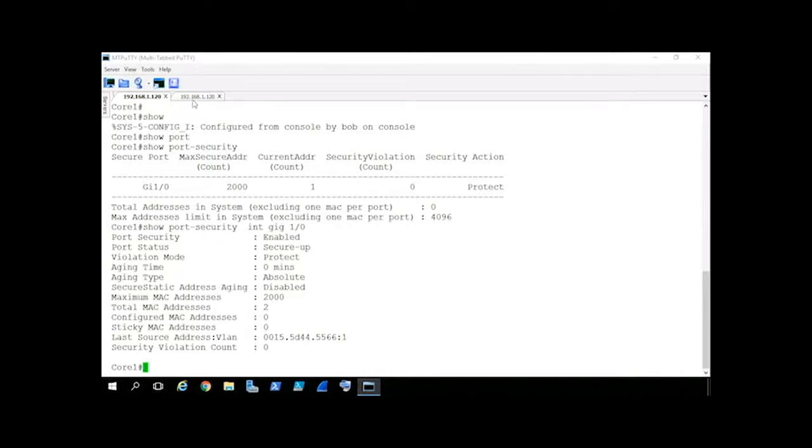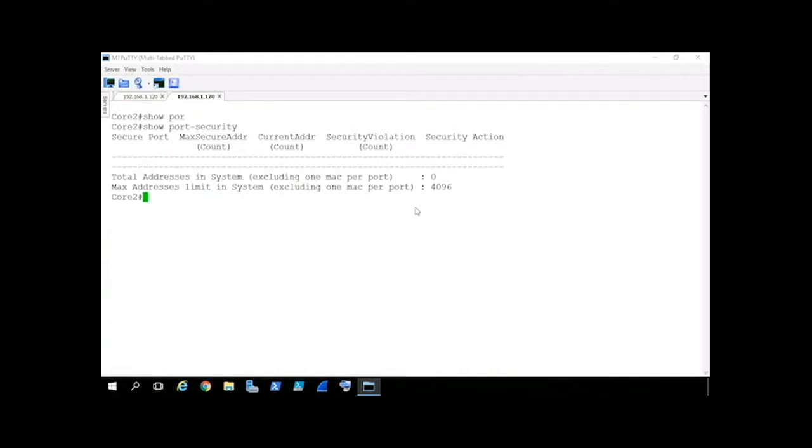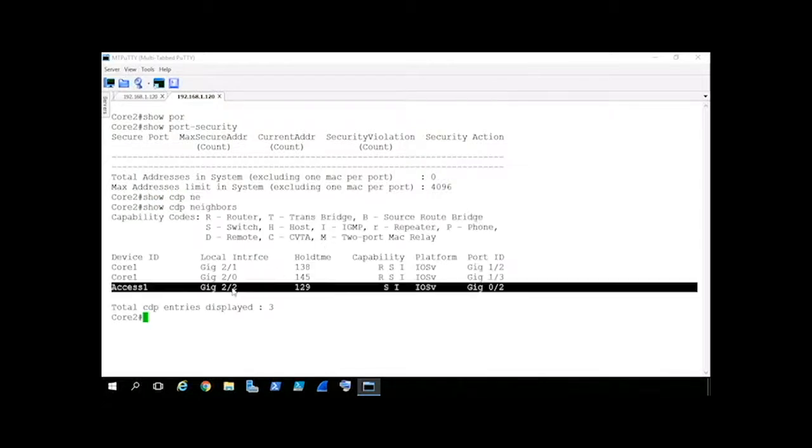So on core 2, we'll also do a show port-security, just to make sure we know what we're starting with. Great. We'll also do a show CDP neighbor, just to make sure we're on the correct interface, the correct trunk, which is 2/2. Fantastic.